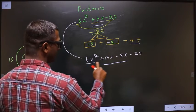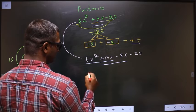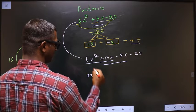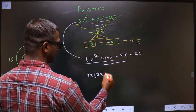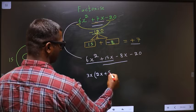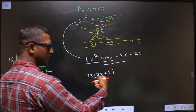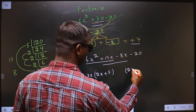Next, what can I take out common from these two? It's 3x. So here I get 2x and here I get 5, giving 3x(2x + 5). Whatever you got in this bracket, here also you should get the same thing.